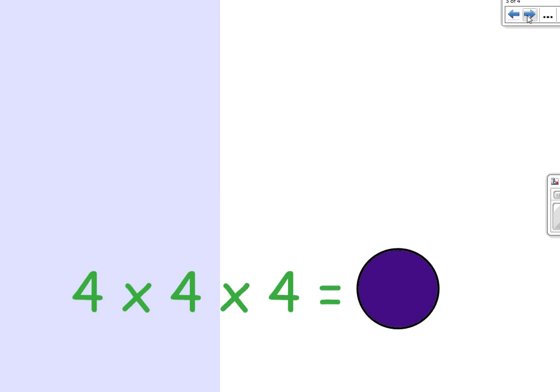First, we would write the base number, which is the number that we are using. Okay, the base number in this one would be four. So we can go ahead and label that base number.